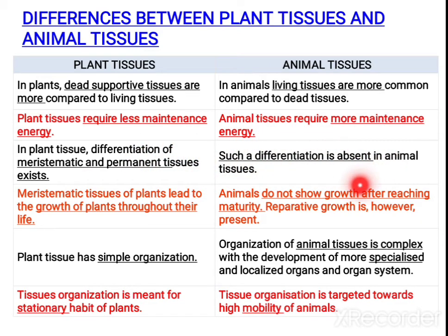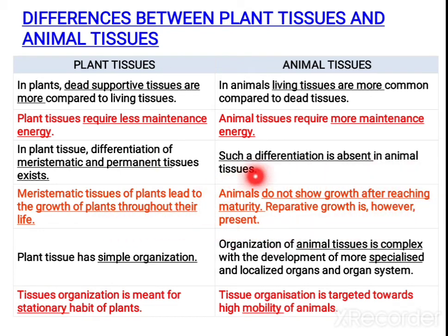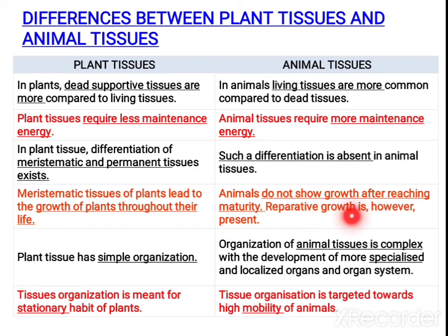There is no such differentiation in animal tissues. Meristematic tissue is the place where growth mainly occurs in plants, but animals do not have that type of tissue. In plants, growth continues throughout their life. But in animals it is not like that — growth is only up to a particular limit, and after maturity there is no further growth. However, reparative growth can occur; for example, if the skin is damaged and you have a wound, healing occurs by means of reparative growth.